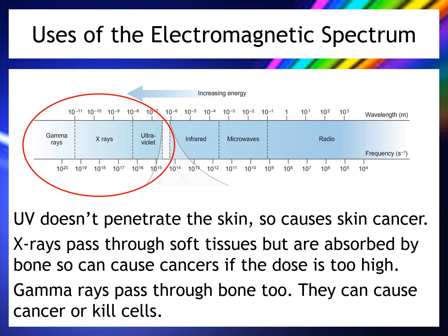X-rays are more energetic and pass through soft tissues, so they don't tend to damage skin, but they can be absorbed by high-density tissues including bone. Where energy is absorbed, it can cause damage such as cancer. Gamma rays can pass through everything, and as they pass through they can cause damage; if absorbed, they can cause cancer or kill cells outright. From ultraviolet to gamma, increasing energy means deeper penetration and different problems — from skin cancer to internal cancers or cell death.